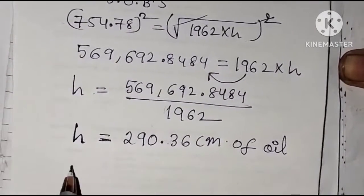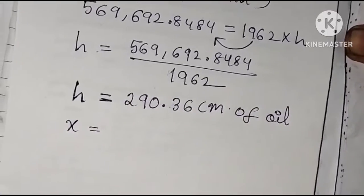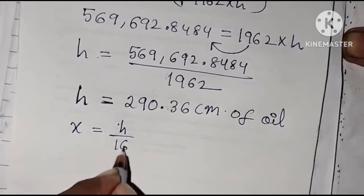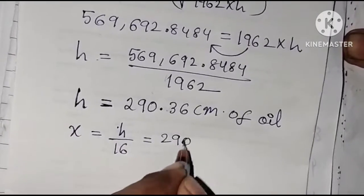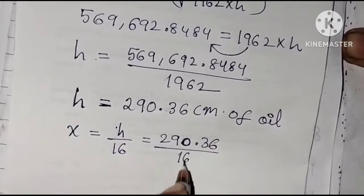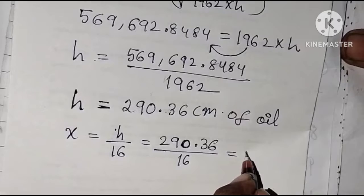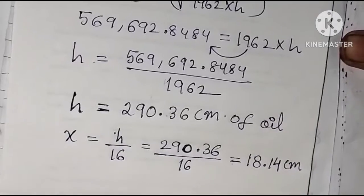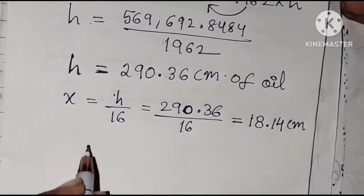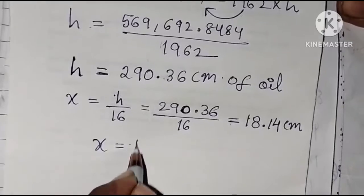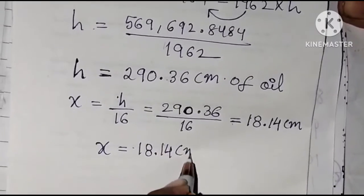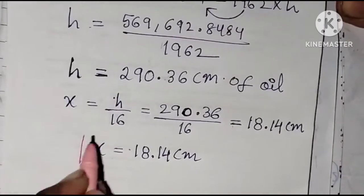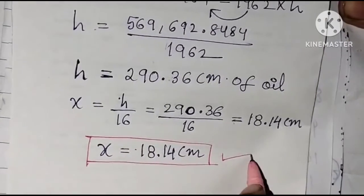Now we need x. x equals h by 16, so x equals 290.36 divided by 16, which gives approximately 18.14 centimeters. Therefore, x equals 18.14 centimeters. The reading of the differential manometer is 18.14 centimeters. This is the final answer.